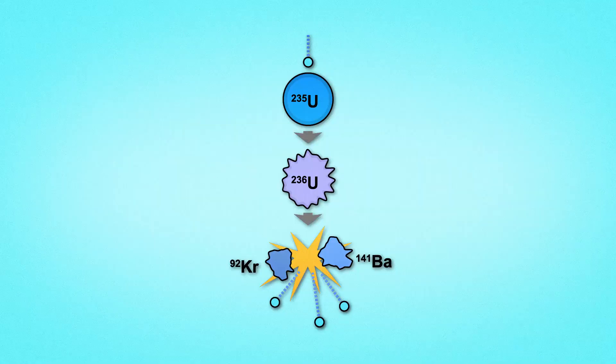When the first ingredient, an atom of uranium-235, is struck by the second ingredient, a stray neutron, the atom becomes so unstable that it splits, releasing a ton of energy, plus a few more neutrons that fly off and split other uranium atoms, creating a chain reaction.